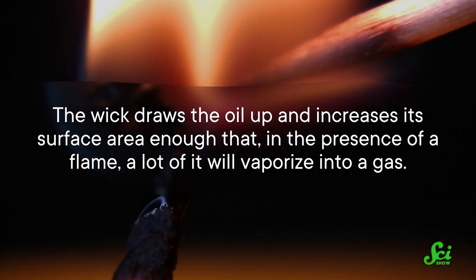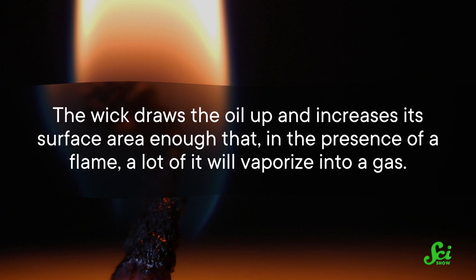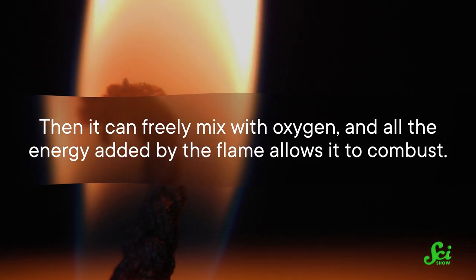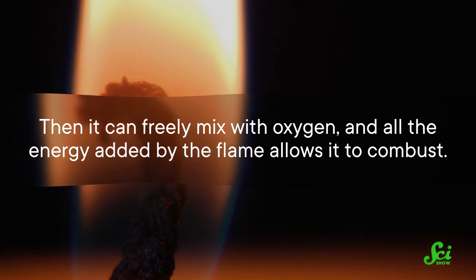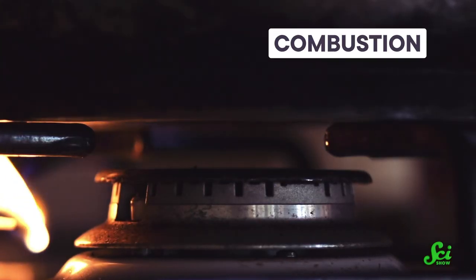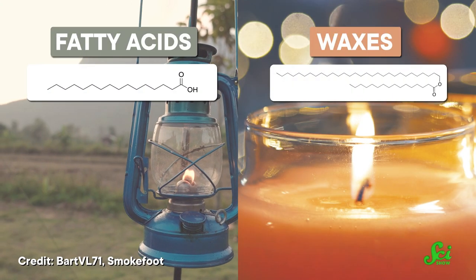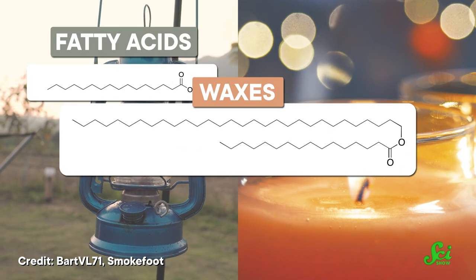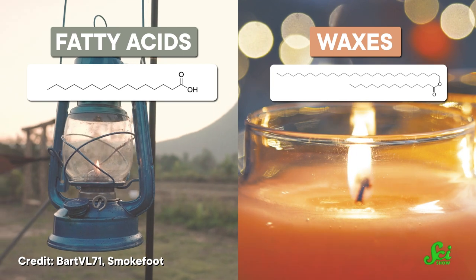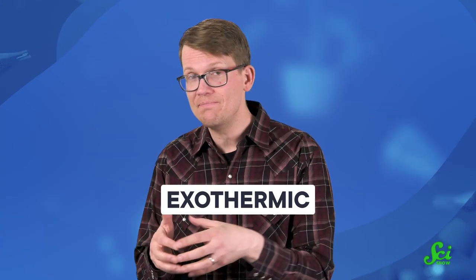To make an oil lamp work, a wick would need to be laid in a shallow dish, and that dish was then filled with oil. Oil by itself doesn't always burn easily — that's what the wick is for. The wick draws the oil up and increases its surface area enough that, in the presence of a flame, a lot of it will vaporize into a gas. Then it can freely mix with oxygen, and all the energy added by the flame allows it to combust. Combustion is a chemical reaction in which a carbon-containing molecule and oxygen from the air are converted into carbon dioxide and water, and sometimes other products.